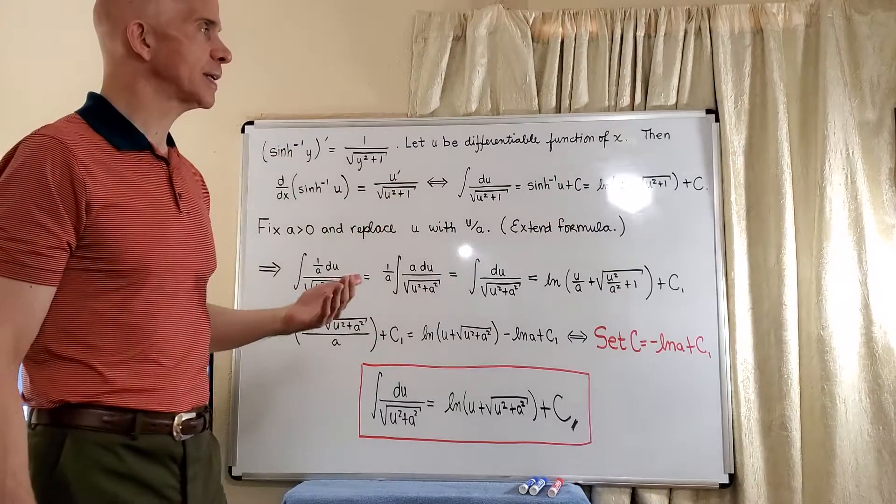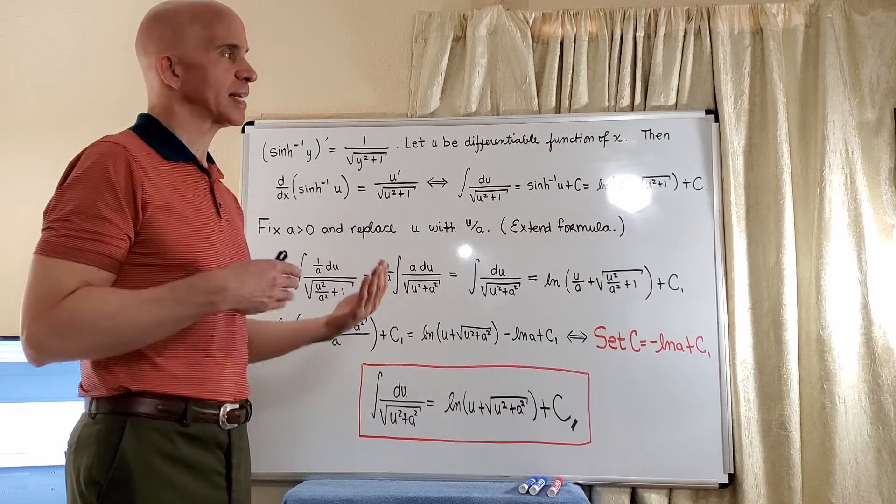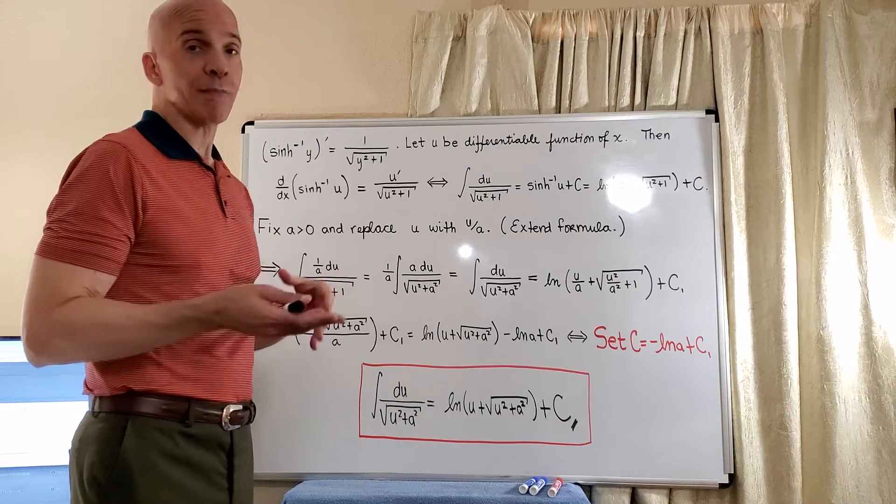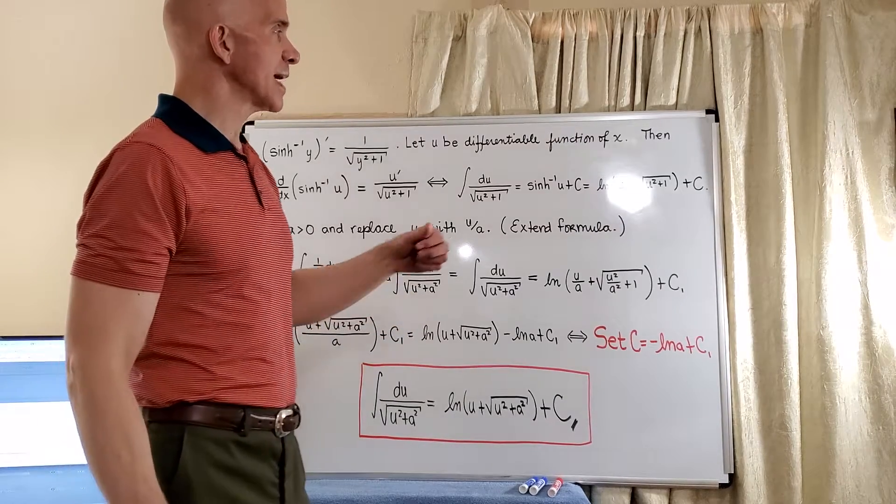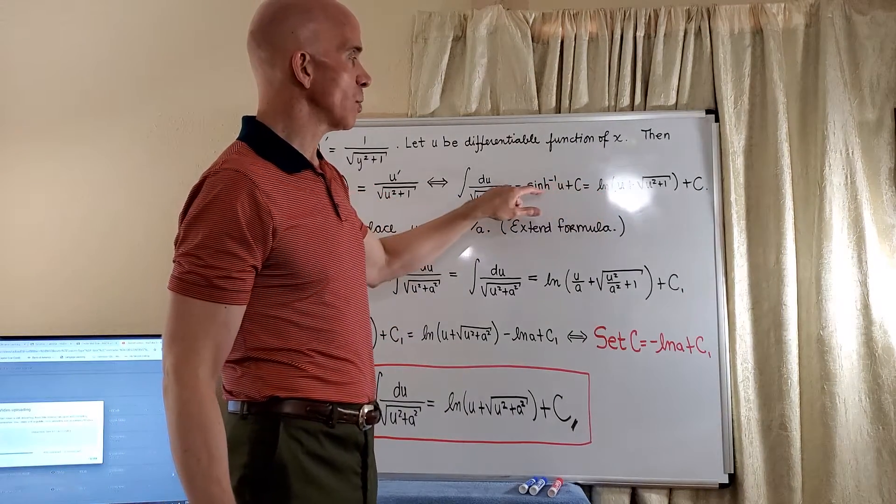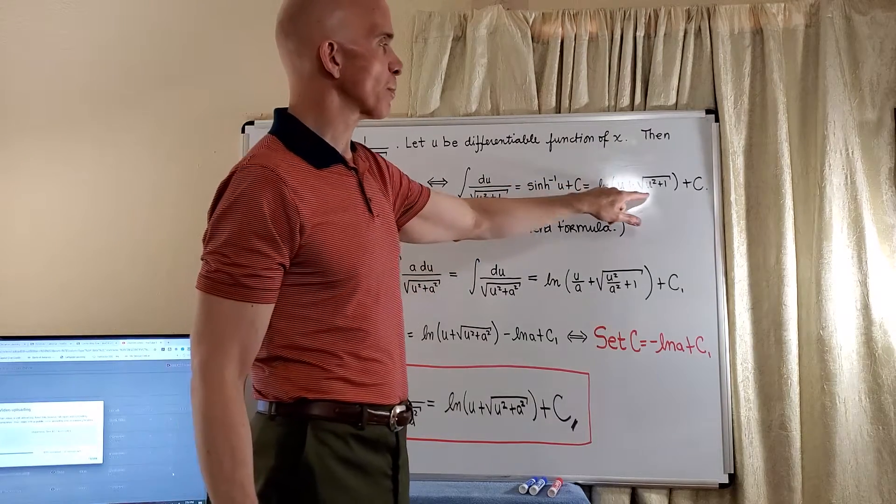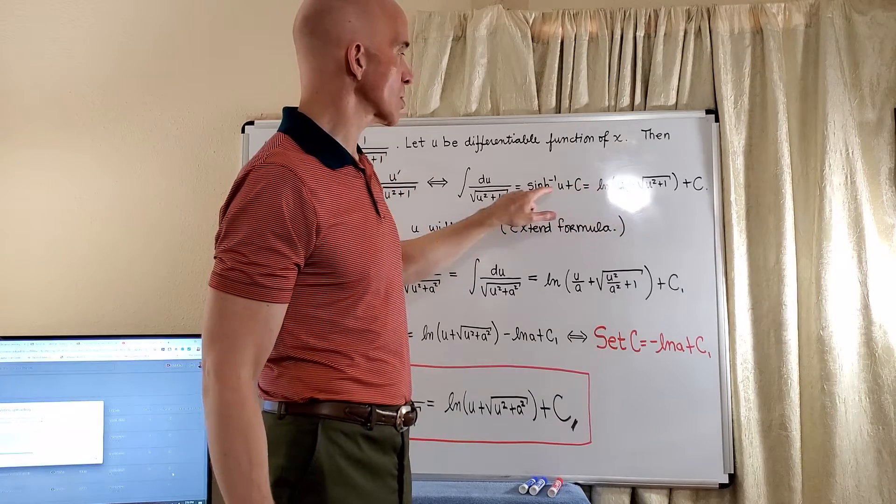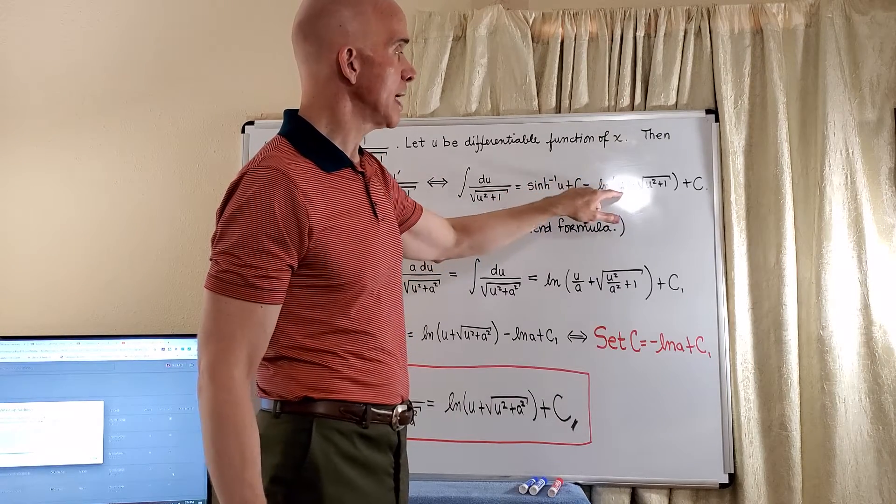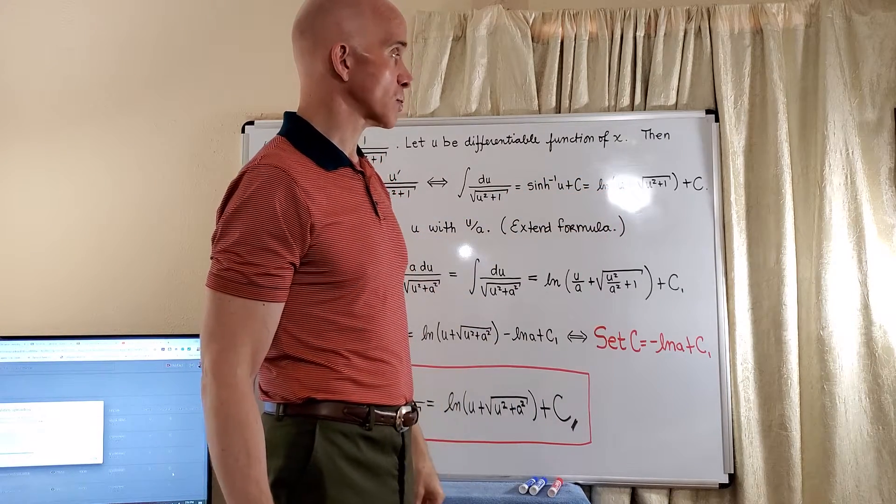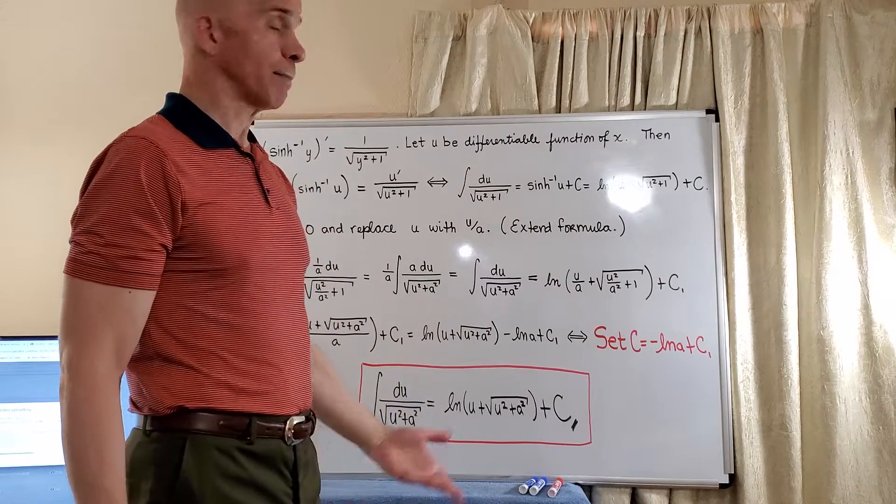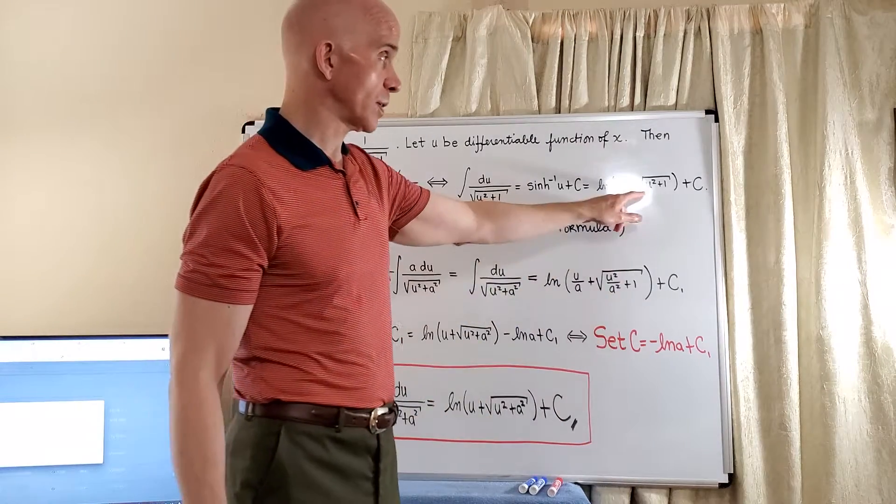Now when we're doing definite integrals and we're doing an engineering problem or even math or physics problem, it's nice to have the logarithmic equivalent of the inverse hyperbolic sine. So it's usually preferred to write it this way. So we'll just go ahead and substitute for this the natural log of u plus the square root of u squared plus 1 plus an arbitrary constant since we've already derived that.